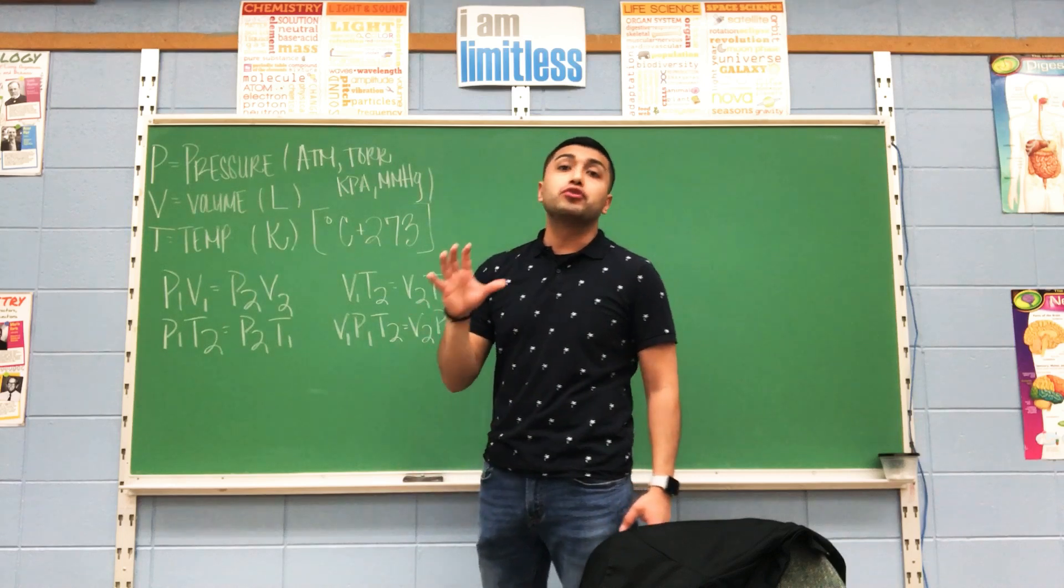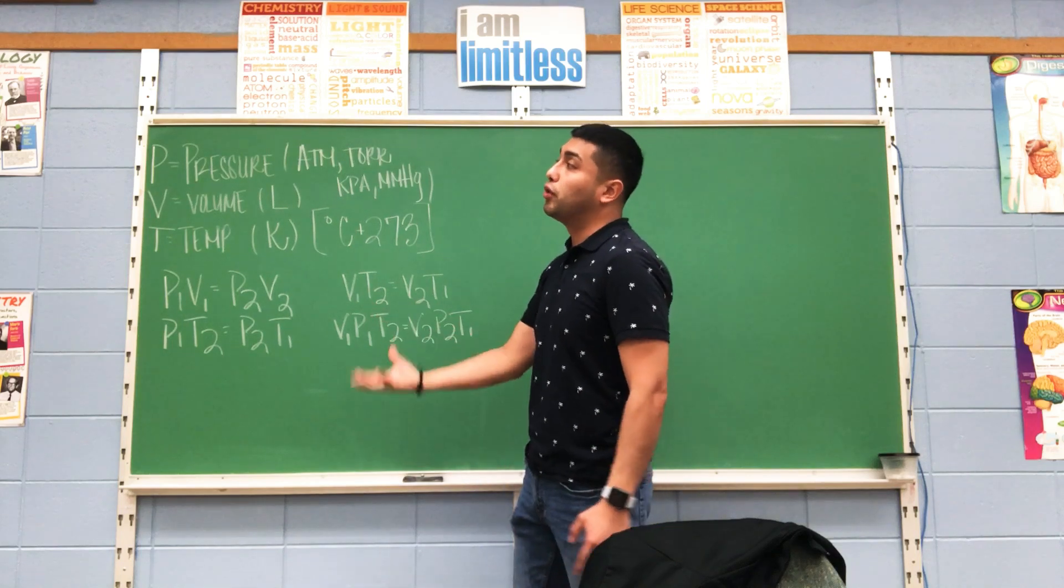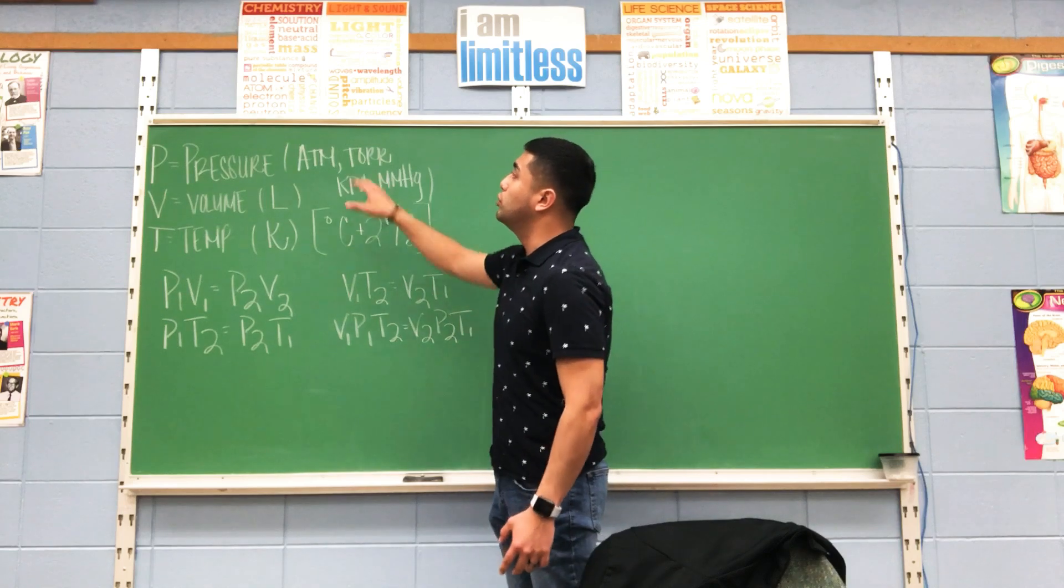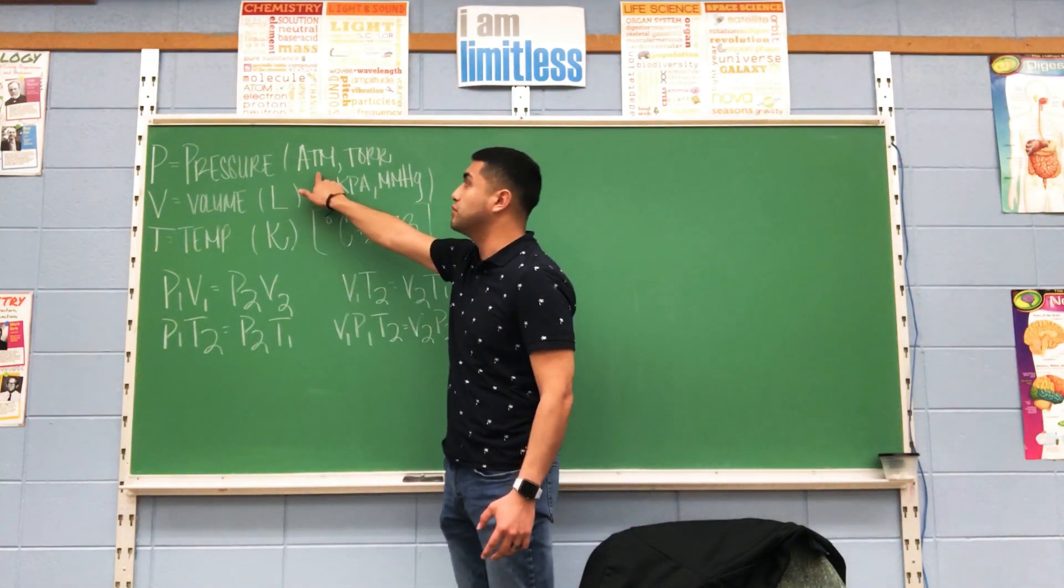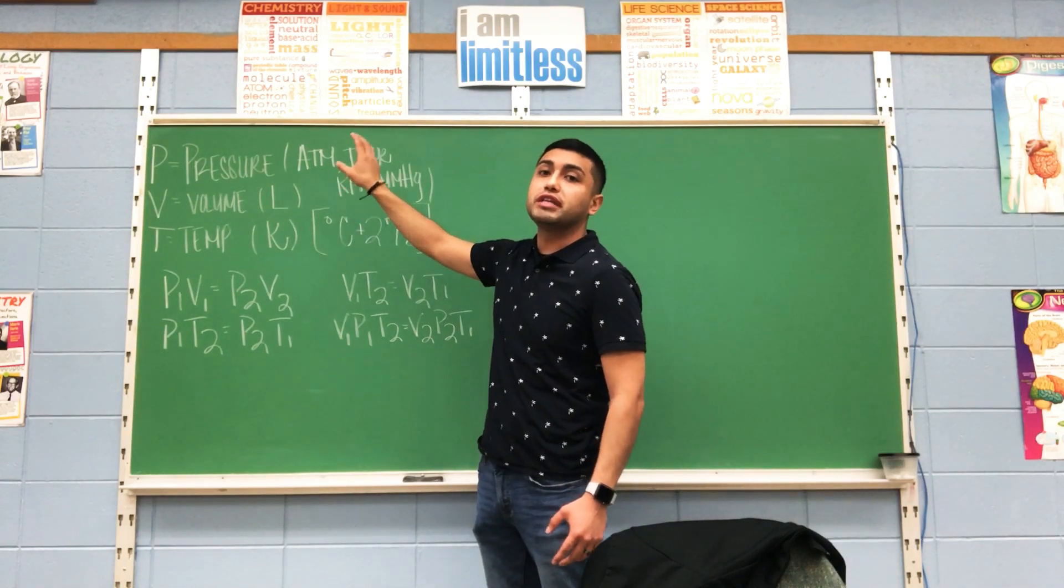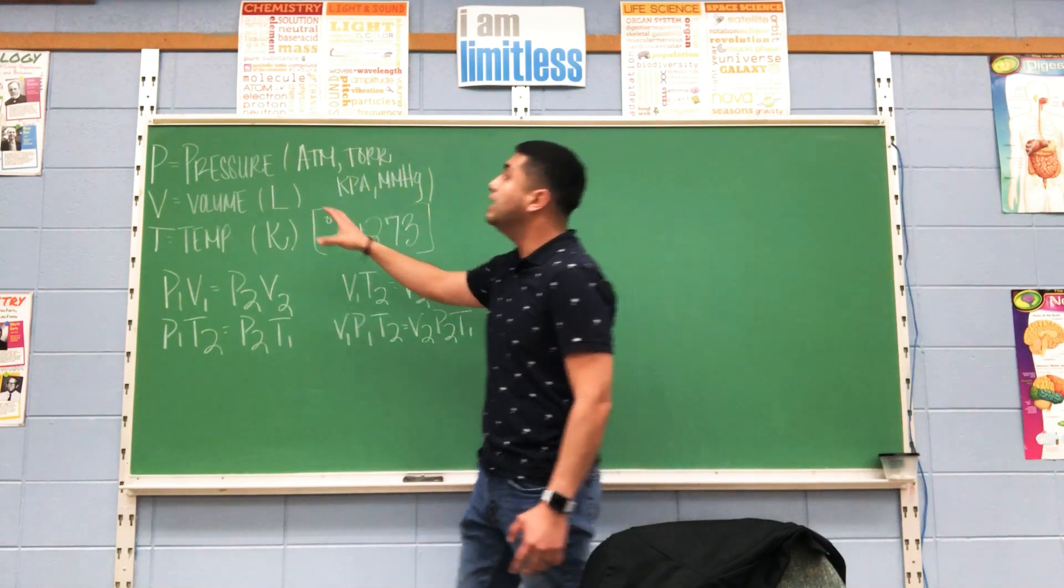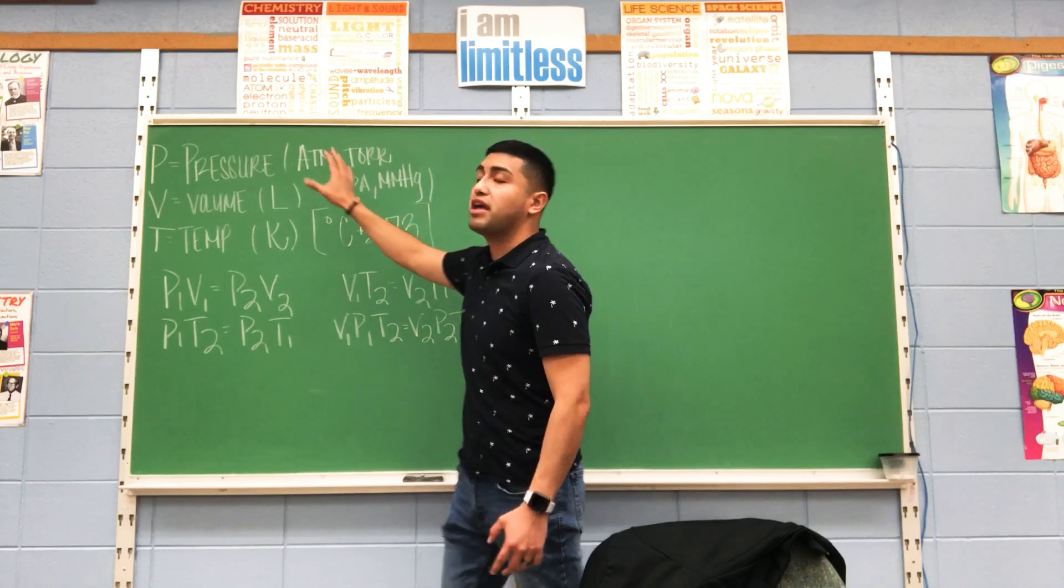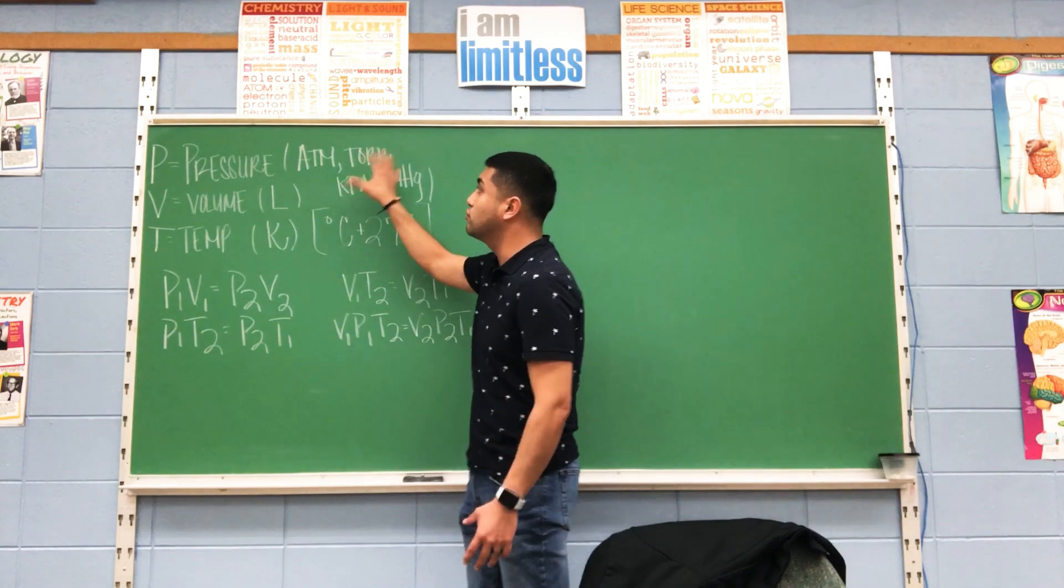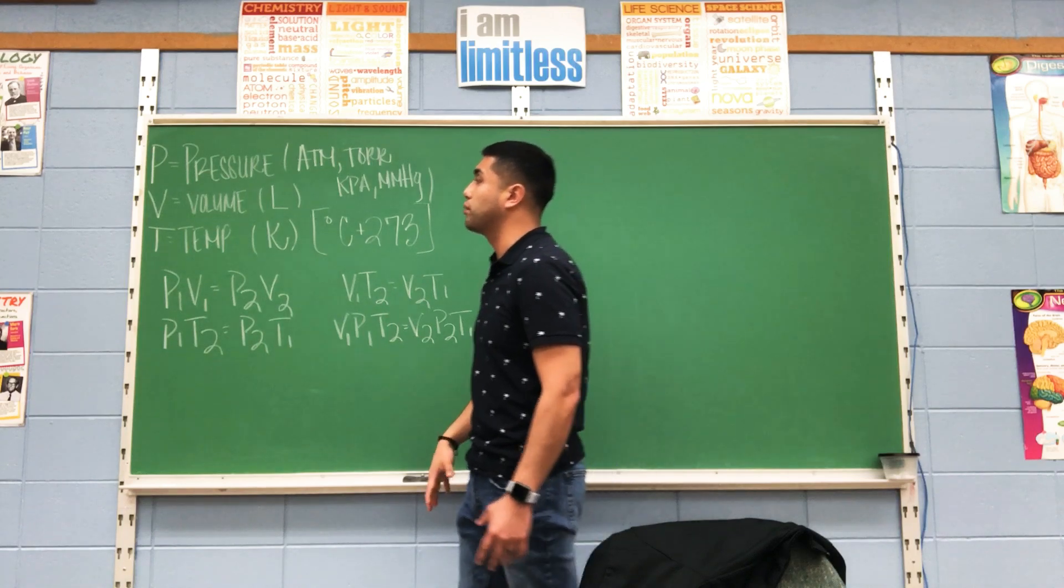Remember that your units are important. Pressure is the hardest to remember. Pressure has many different units. We use four of these for the worksheets: ATMs (atmospheres), TOR, KPA (kilopascals), and MMHG (millimeters of mercury). Anytime you see any of these four, you know that it is in reference to pressure when it comes to the gas laws.